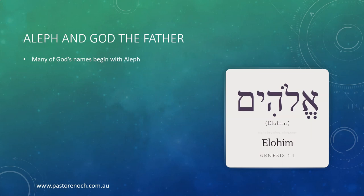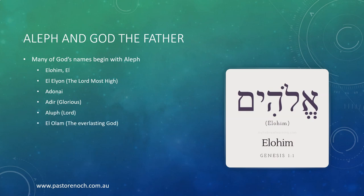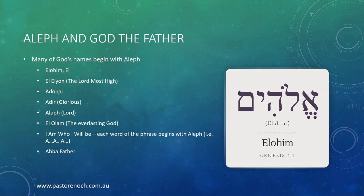There are many of God's names that begin with the letter Aleph. For example, Elohim, El, El Elyon, Adonai, Adir the Glorious One, Aluf, Lord, El Olam the Everlasting God, and even 'I am who I will be' — each word of that phrase begins with the letter Aleph. Abba Father also begins with Aleph. So there's a whole lot of tie-ins here with Almighty God, our Abba Father, and the letter Aleph.